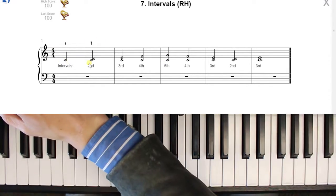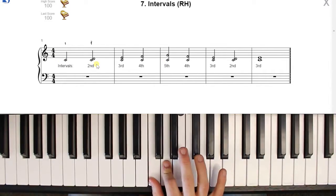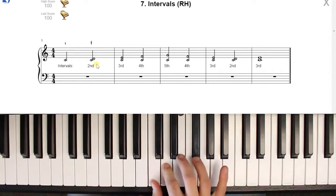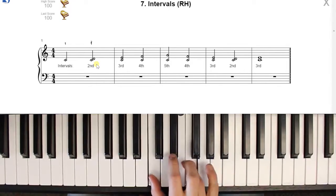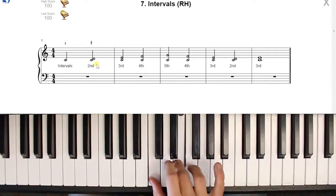Notice all of them are also anchored with middle C. So you have middle C, then your second interval, which is C and D, then your third, then your fourth, then your fifth, then fourth, third, second, then back to third.